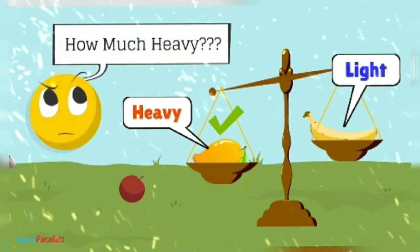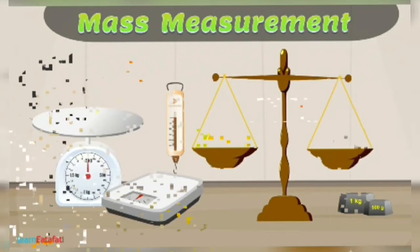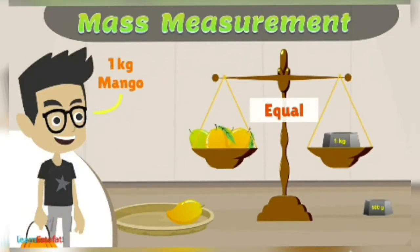You must have seen these instruments, weighing balance, all these things. What are they? All these are used to measure mass or weight. They are called the weighing balance. Weight is measured in kilograms. One kilogram is equal to 1000 grams.